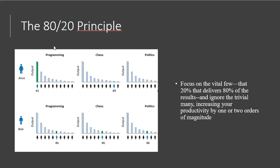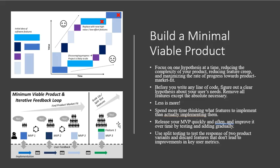The 80-20 principle applies here. If you have two persons — Bob spreading his effort across many things like programming, chess, and politics — and Alice just focusing 100% on programming, she will have exponentially more results because of the 80-20 principle.